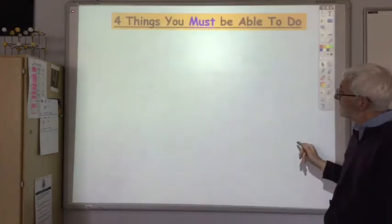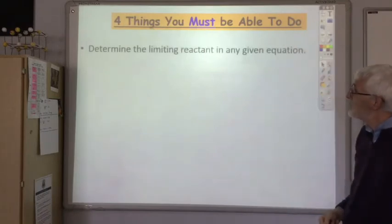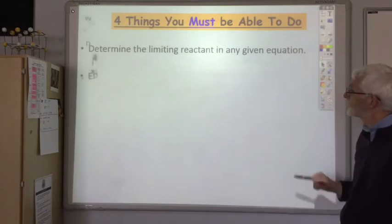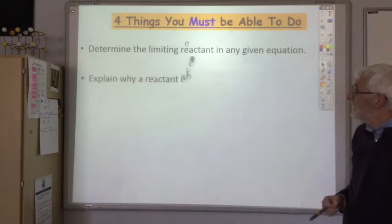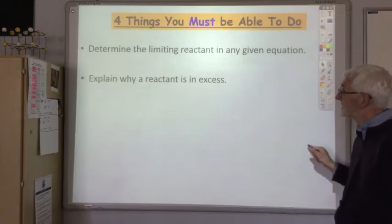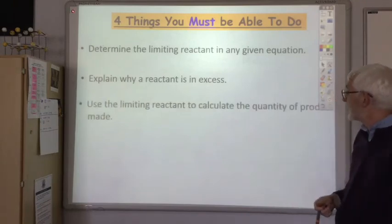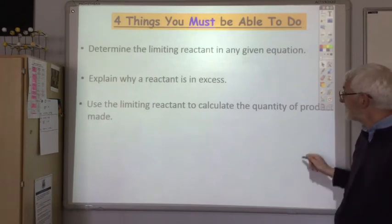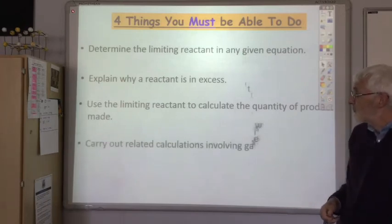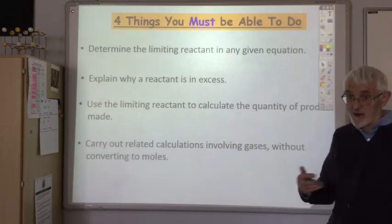There are four things you must be able to do: determine the limiting reactant in any given equation; explain why a reactant is in excess; use the limiting reactant to calculate the quantity of product made; and carry out related calculations involving gases without converting to moles.